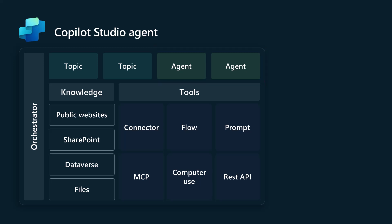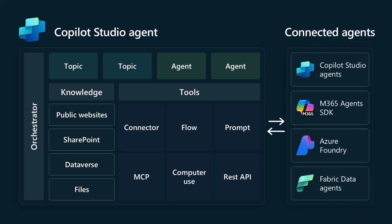There is another option you can do with multi-agent as well: something called a connected agent. A connected agent is an agent that stands on its own. It can be created inside Copilot Studio as a standalone agent, it could be an M365 agent built with the SDK, and in the future we're going to see Azure Foundry agents and Fabric data agents. These are all built on Microsoft technology and will work together to be connected in.